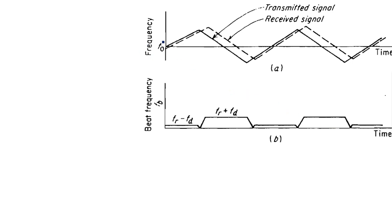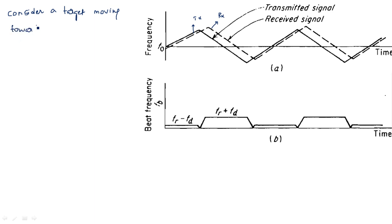Now consider the waveforms with triangular modulation. The transmitted signal frequency is shown as a solid line and the received signal as a dashed line. Here we consider a target moving towards the FMCW radar system, so the received signal is shifted in time by τ and also shifted in frequency due to the Doppler effect.